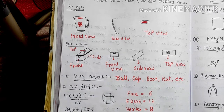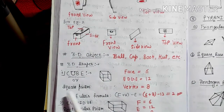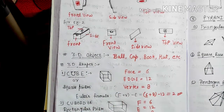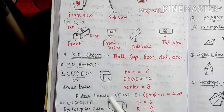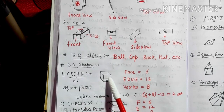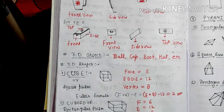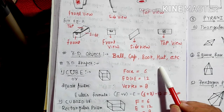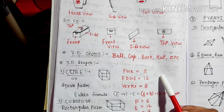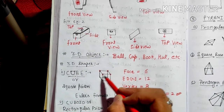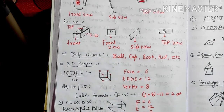Let us start with the first 3D shape, that is the cube — we have already covered this in class 7th, so we are taking a brief explanation. The cube has 6 faces: 1, 2, 3, 4, 5, and then the back side 6. The number of faces in a cube is 6, the number of edges is 12, and the number of vertices is 8: 1, 2, 3, 4, 5, 6, 7, 8.